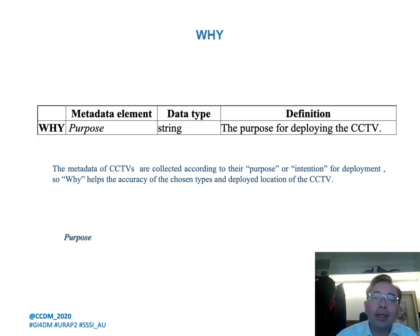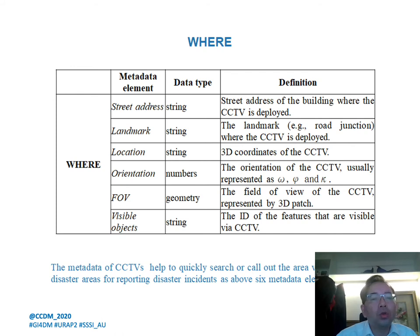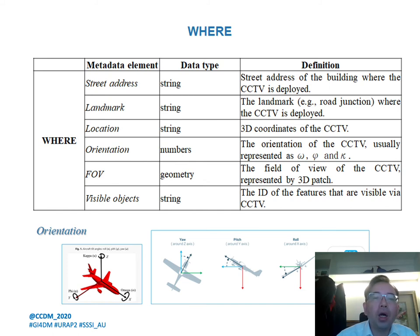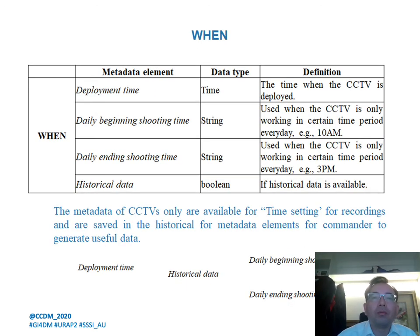We can also know the purpose for which the CCTV was originally developed. From 'where,' we can retrieve the street address, landmark, location, orientation, FOV, and visible objects. From orientation, we need to know omega, kappa, phi — and equivalently yaw, pitch, and roll. From 'when,' we use the development time, daily beginning and ending shooting times, and historical data timelines to determine when events occurred.